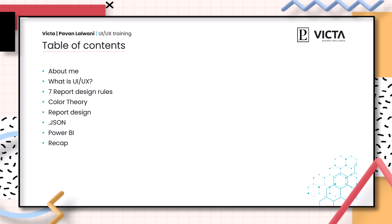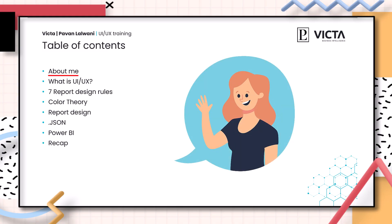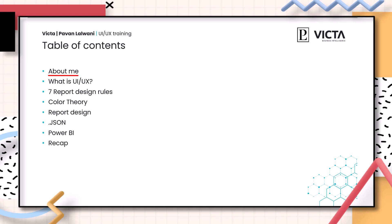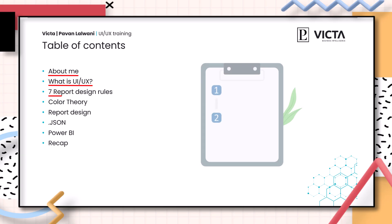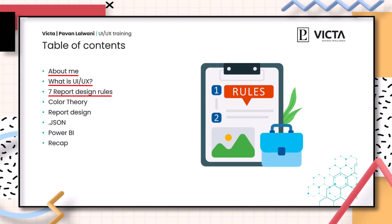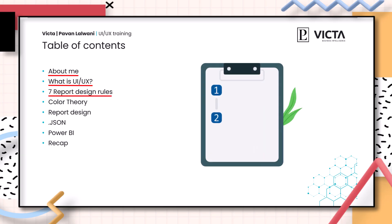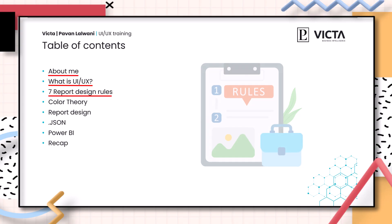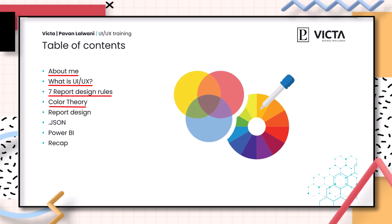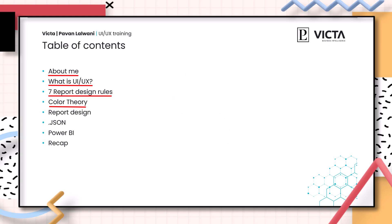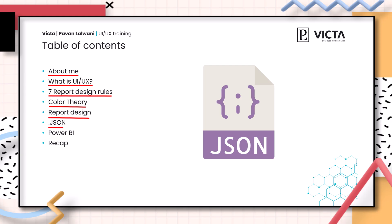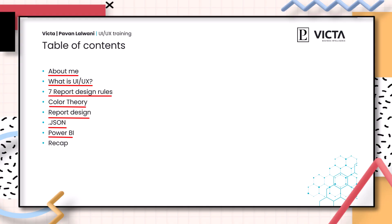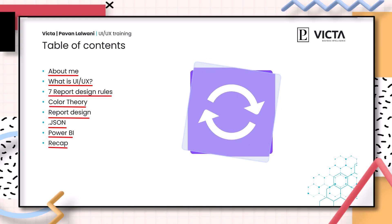I will start with introducing myself to you so you know a little bit more about me. Then we'll get into the theory of what is UI UX. Then we will go through seven report design rules we follow as we design a report. Then we will get a little bit of information about color theories. Then we start designing our report and building the base of our design, a JSON file. Then we implement our design and JSON into Power BI. And at the end, we will do a short recap of what we learned in this training.